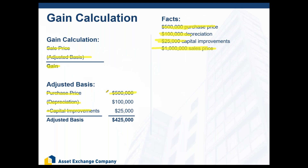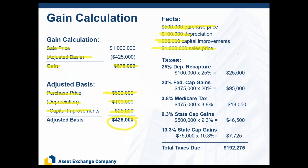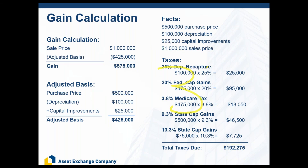To get your adjusted basis: purchase price minus depreciation plus capital improvements gives you $425,000. You subtract that from your sale price — anything above your adjusted basis is gain. In this situation, we've got $575,000 of gain. Your CPA is going to crunch the numbers at the end of the year and do all these line-by-line tax calculations to come up with a number you're going to owe. In this example, based on our million-dollar sale, we've got $192,000 of tax liability — that's about 33% of the gain.